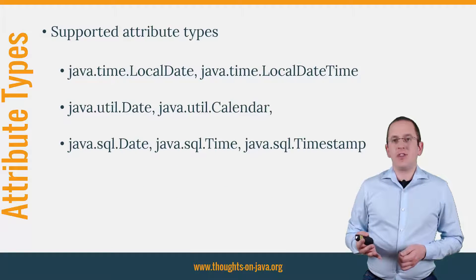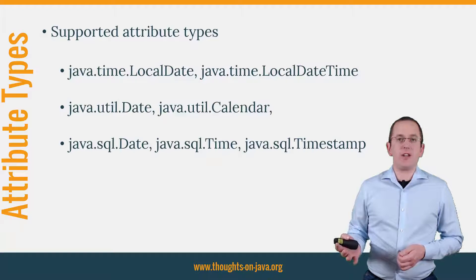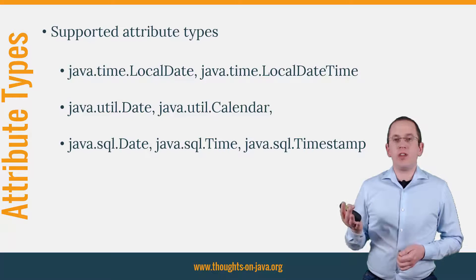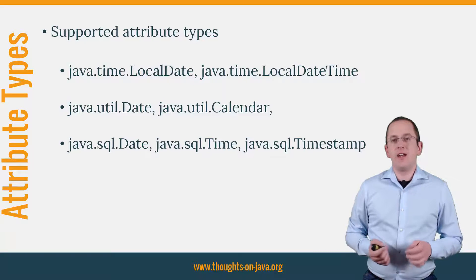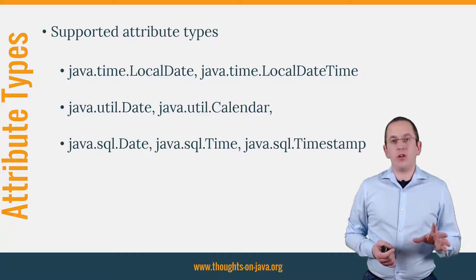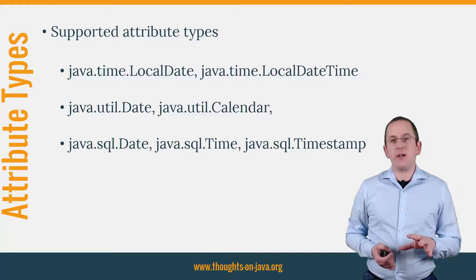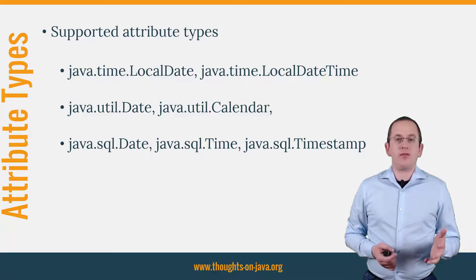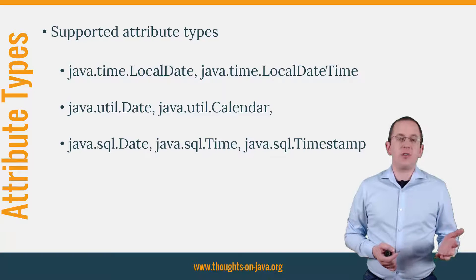You can use the @CreationTimestamp and @UpdateTimestamp annotations with the attribute types listed on this slide. Please be aware that the support for LocalDate and LocalDateTime was added in Hibernate version 5.2.3, so you can't use it with older Hibernate versions.